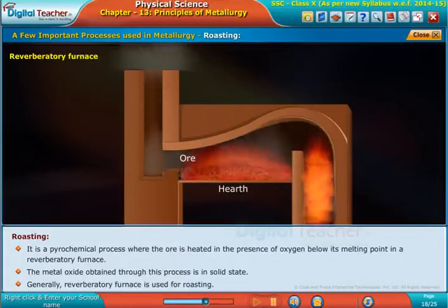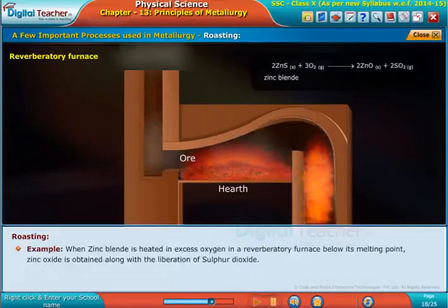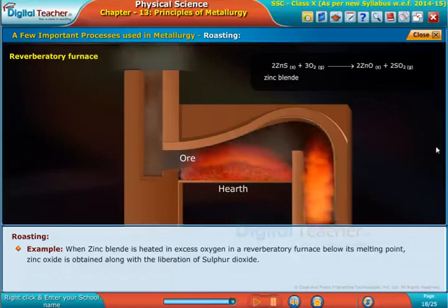For example, when zinc blend is heated in excess oxygen in a reverberatory furnace below its melting point, zinc oxide is obtained along with the liberation of sulfur dioxide.